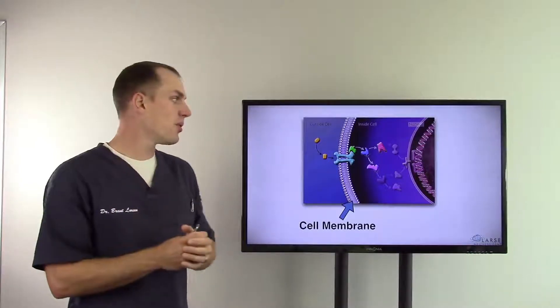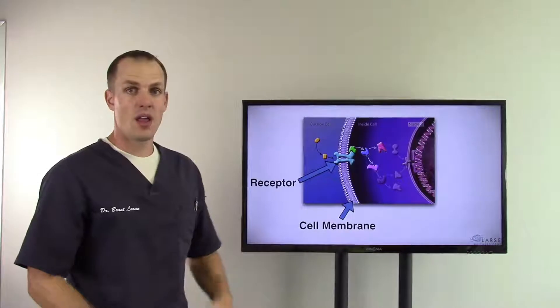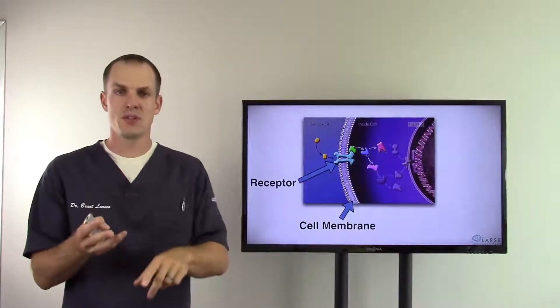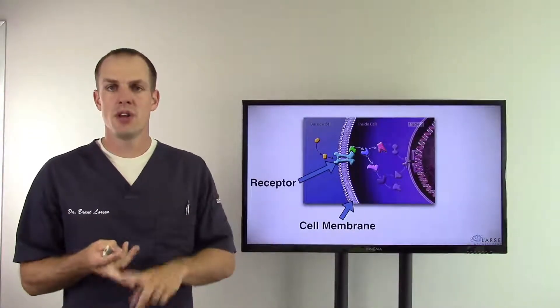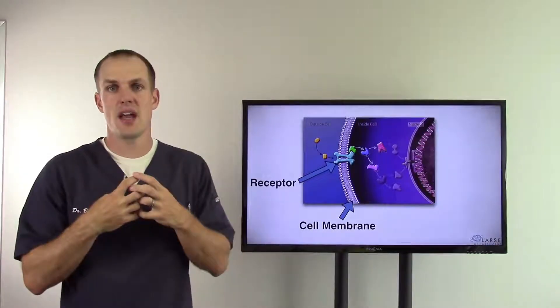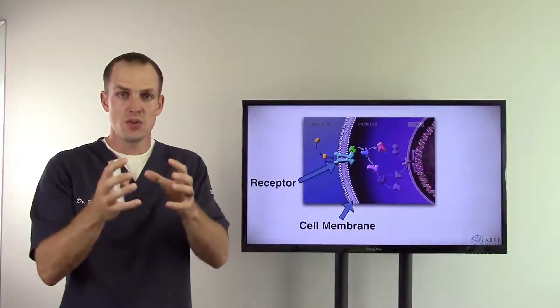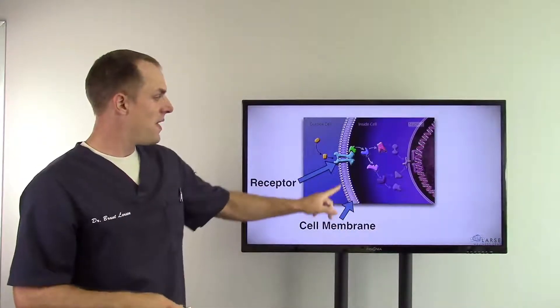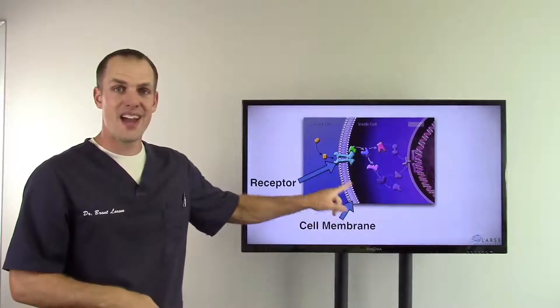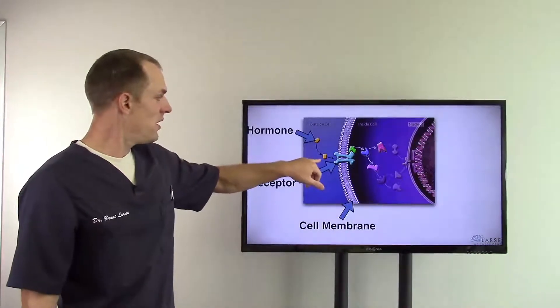We get this cell membrane right here - it's a double layer of fat and this is going to be very important. Now you see right here we have a receptor. A receptor will bind hormones, it'll bind vitamins, minerals, all kinds of things that your cells need to take inside of itself.